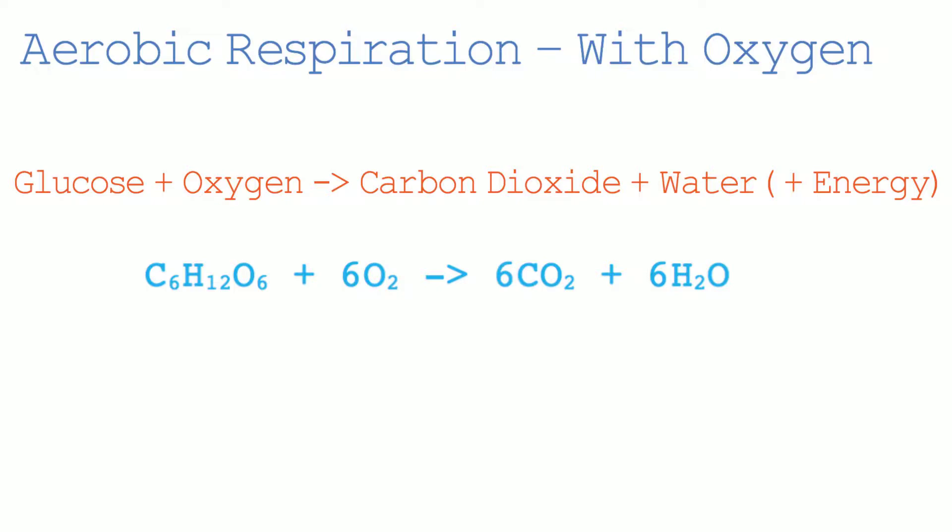We can check if the formula above is balanced by checking if the number of each element on either side of the arrow is the same. On the left side of the arrow, we have 6 carbons, 12 hydrogens, and 18 oxygens. 6 of these oxygen atoms come from the glucose and 12 come from the oxygen molecules. We get 12 from the oxygen because there are 6 molecules of oxygen and each molecule contains 2 oxygen atoms, so we do 6 times 2, which gives us 12. On the right side of the equation, we have 6 carbons, 12 hydrogens, and 18 oxygens — 12 of these oxygens come from the carbon dioxide and 6 come from the water. We can see that the number of atoms of each element is the same on both sides of the arrow. Therefore, we can say that this equation is balanced.